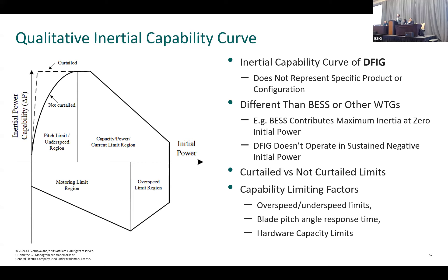This is quite useful and important, though many people dislike hearing that inertia contribution depends on time of day, operating conditions, and controls — people want a single number like 5, 3, or 4. Unfortunately, it's not that simple. Regardless of where you draw the line, you will either underestimate or overestimate the inertia for a given operating condition.